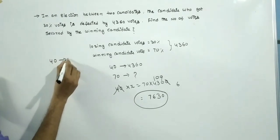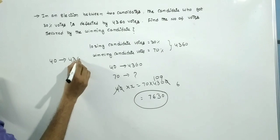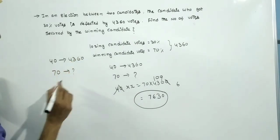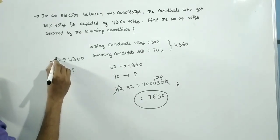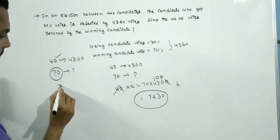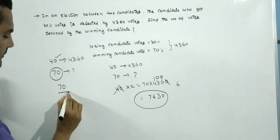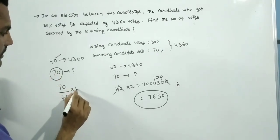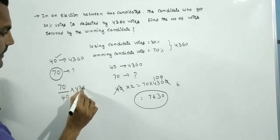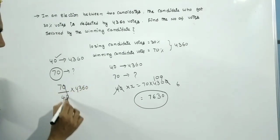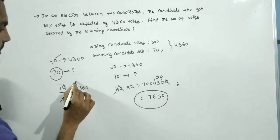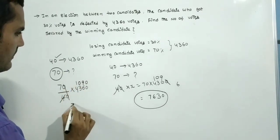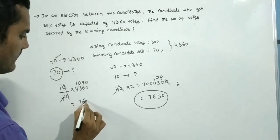Alternatively: 40% equals 4360, so 70% is calculated as (70/40) into 4360. Cancel the zeros, and computing gives 7,630. That is the winning candidate's votes.